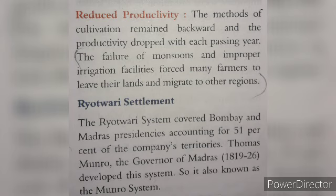The Ryotwari system covered Bombay and Madras Presidencies, accounting for 51% of company territories. Thomas Munro, the Governor of Madras (1819–26), developed this system, so it is also known as the Munro System.